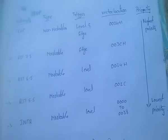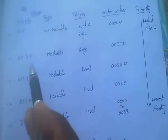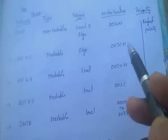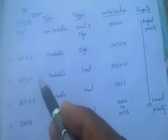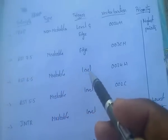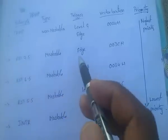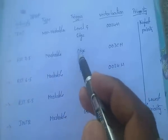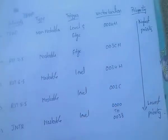RST 7.5 is a maskable interrupt. It uses edge triggering — it is the only hardware interrupt that is exclusively edge-triggered. Its vector location is 003CH.